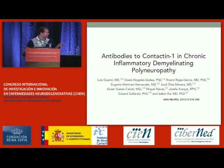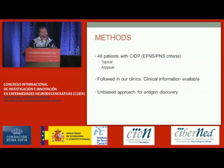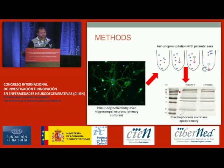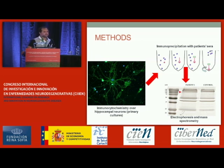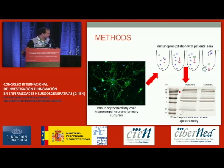This led to the paper that was awarded yesterday. We took 46 patients from our clinics with typical or atypical CIDP and followed an unbiased approach for antigen discovery. We used primary cultures of rat hippocampal neurons because they had been used before for antigen discovery in autoimmune encephalitis, they are well-suited for immunoprecipitation studies, and the molecular machinery of myelination is similar in both the central and peripheral nervous system.